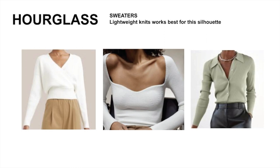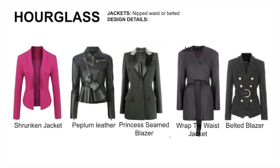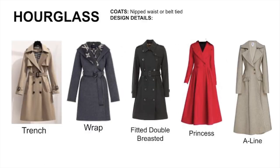Following the same concept for sweaters, make sure they are lightweight knits. For pants and jeans, mid-rise works best. The waistline needs to be shaped inwards from the hip. Angled-up pockets from the side work best. For jackets, make sure it's nipped at the waist or belted. The same rule applies for coats.